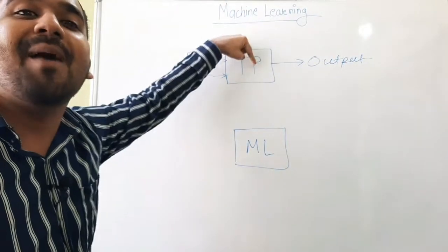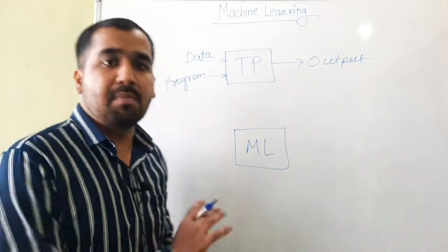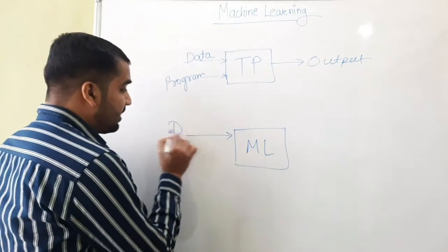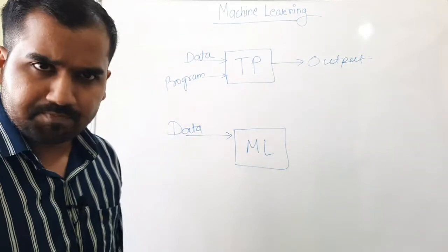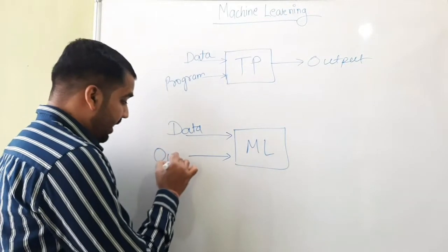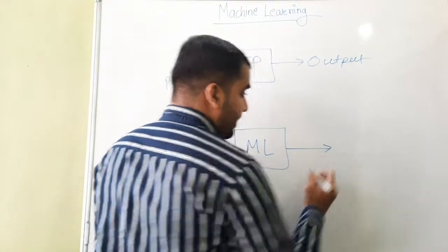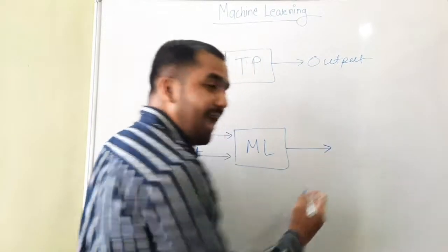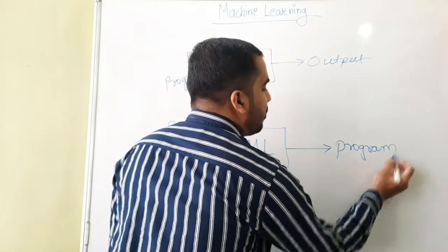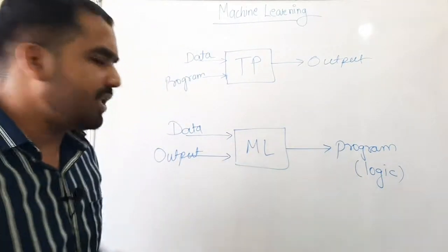In traditional programming, we need to explicitly program — we feed it with logic. But in machine learning the case is very different. The very important element as input is data, and the second very important thing is output. As a result, what you get out is a program, a logic, or a model.